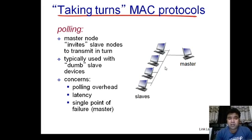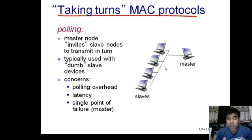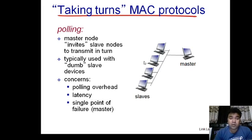Polling is typically used with dumb slave devices. The master node invites slave nodes to transmit in turns. However, there are a few concerns with this protocol: polling overhead, latency because it works in turns, and a single point of failure — if the master fails, the complete protocol fails.